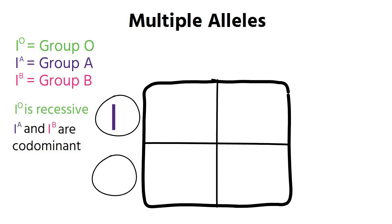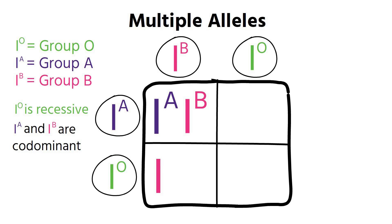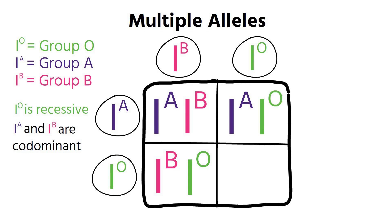People with genotype I superscript A, I superscript B will have blood group AB. I superscript O is always pushed out by I superscript A or I superscript B. For example, if one parent has alleles I superscript B and I superscript O giving blood group B, and the other has I superscript A and I superscript O giving blood group A, the possible offspring are: type AB, type A, type B, or type O.